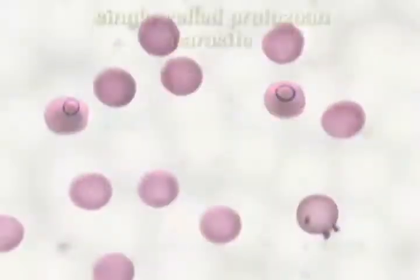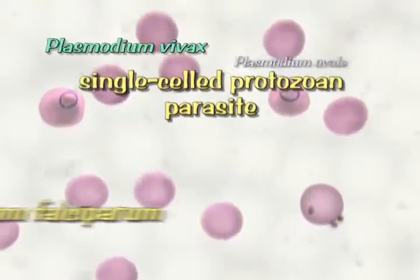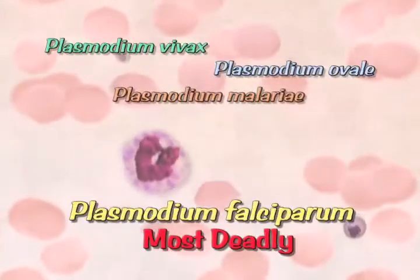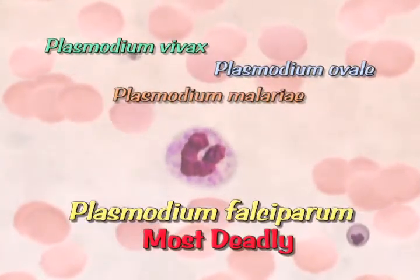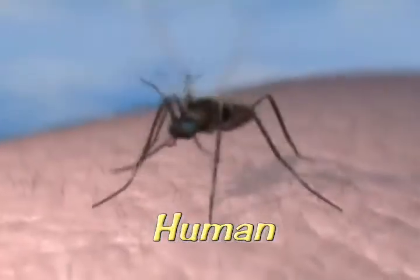The malaria parasite is a single-celled organism, or protozoan, too small to be seen by the naked eye. In nature, malaria parasites spread by infecting successively two types of host: human and mosquito.